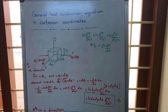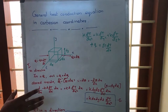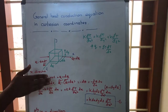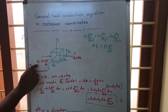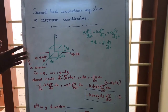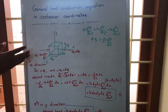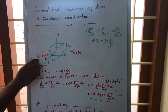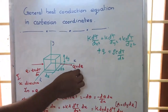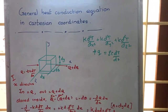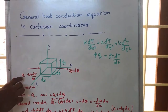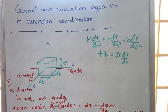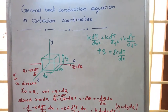First of all, we are taking heat transfer in the x-direction. The heat energy entering is taken as q and heat energy going out is taken as q plus dq. So q is equal to k dT/dx — that is the Fourier equation.